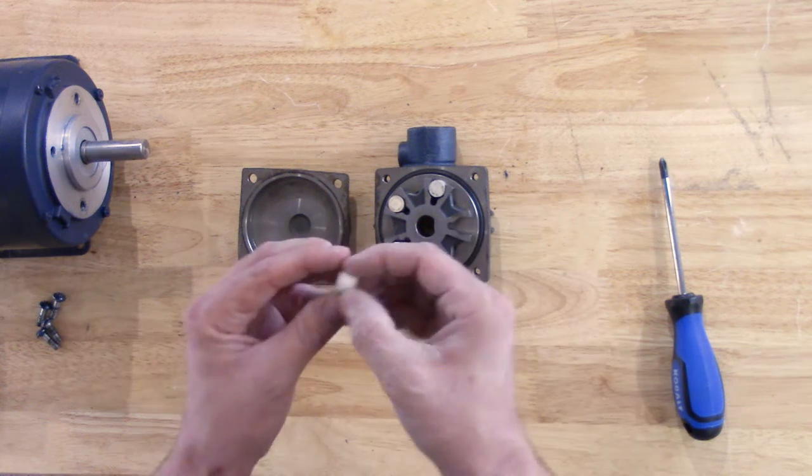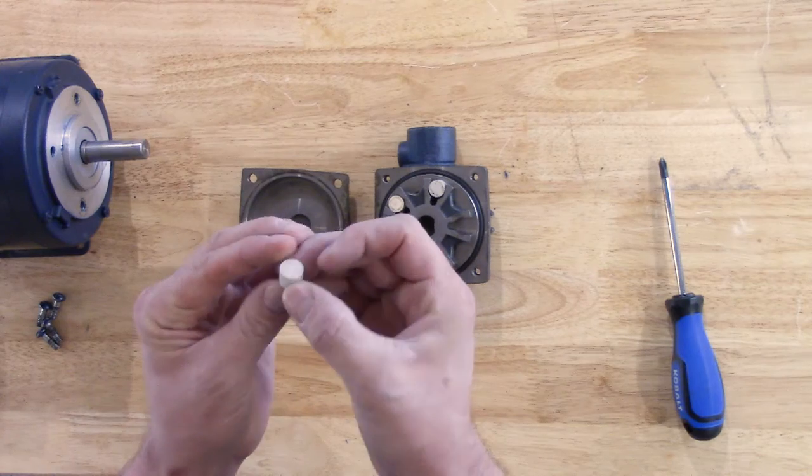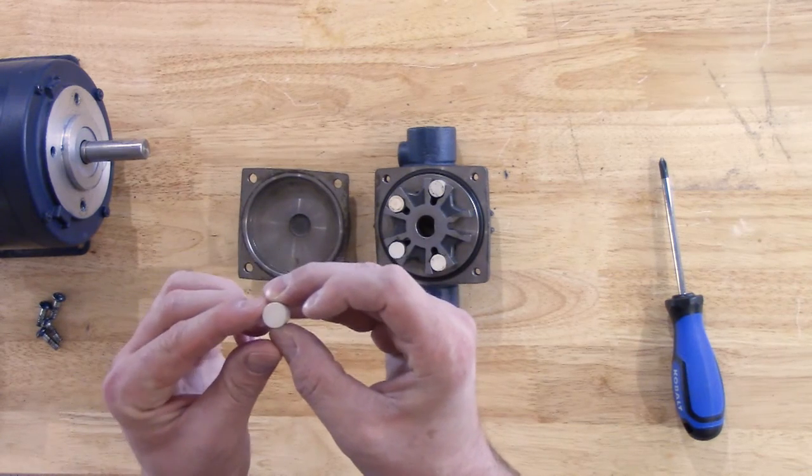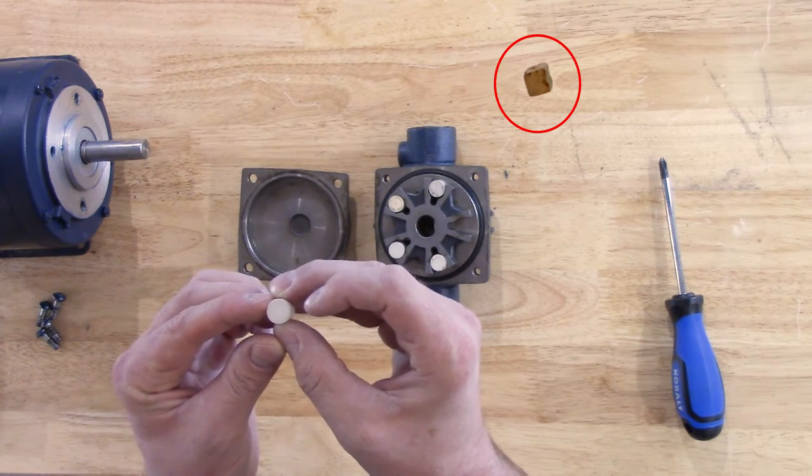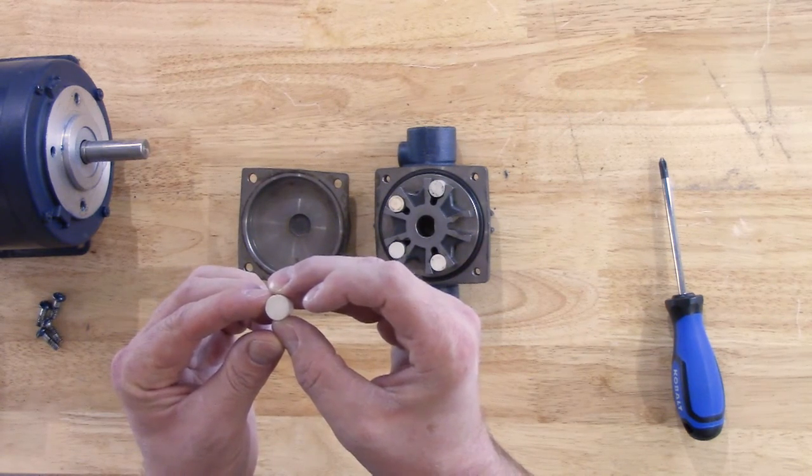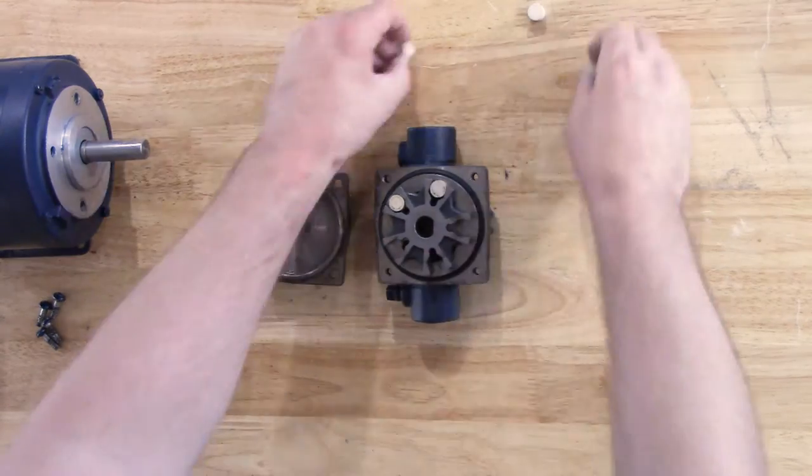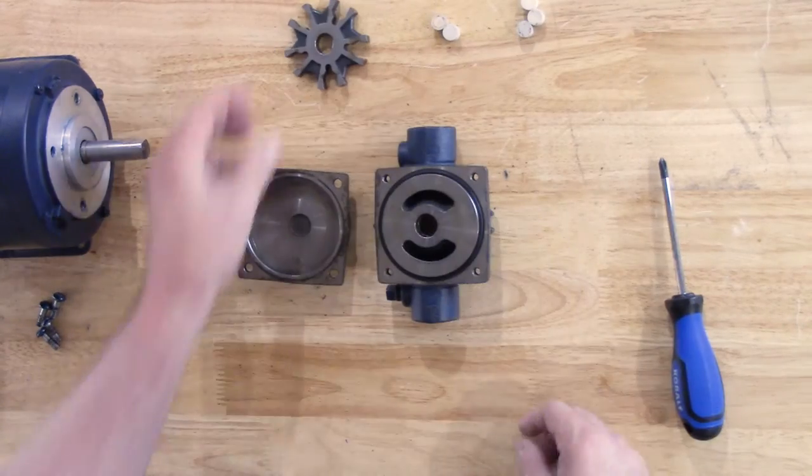Now we can see our Teflon rollers. This is a good time to inspect these rollers. Make sure that they are not flat spotted or undersized in any degree. If so, now is a good time to replace those. We'll set these off to the side for now, as well as our rotor.